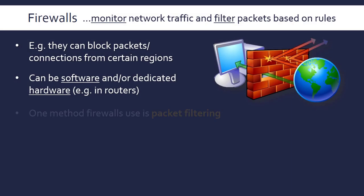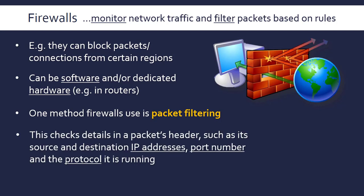High-end firewalls use many complicated and sophisticated methods, maybe even with artificial intelligence. We're going to look at three relatively simple methods that have developed as firewalls have evolved. The first of these is packet filtering, which involves looking at the actual packet's header.